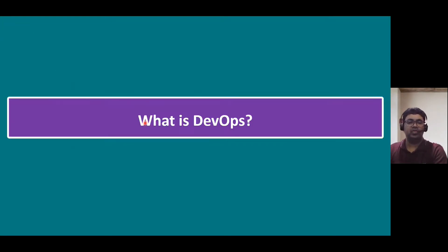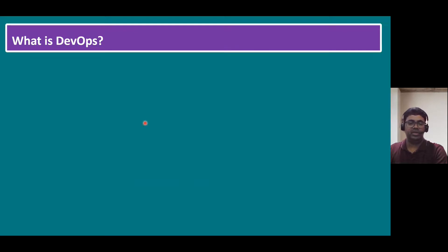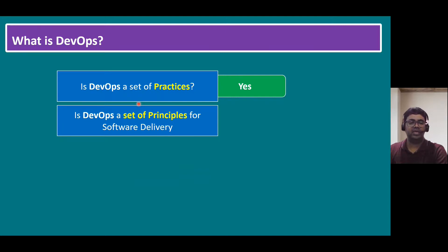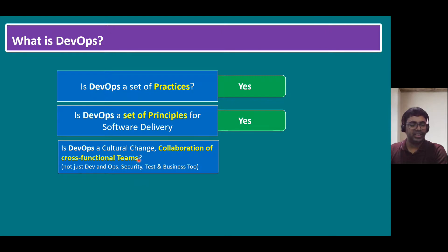Now it's time to talk about what DevOps — development and operations — actually is. DevOps is a set of practices. Is DevOps a set of principles for software delivery? Yes. Is DevOps a cultural change and collaboration of cross-functional teams — not just development and operations, but also security ops, quality testing teams, and even business intelligence or business consultant teams? Yes.